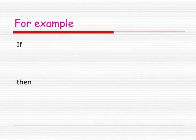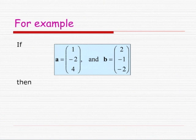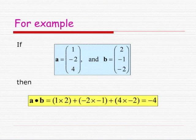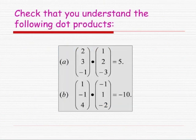For example, if A is (1, −2, 4) and B is (2, −1, −2), then A·B = 1×2 + (−2)×(−1) + 4×(−2), which equals −4. Check that you understand how to calculate dot or scalar products on the two examples below, which have the answers given.